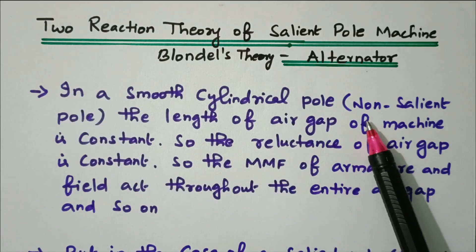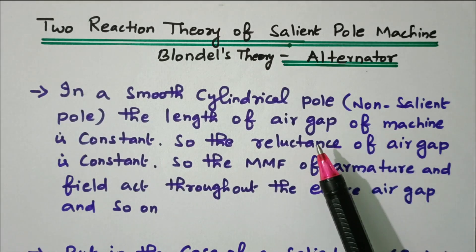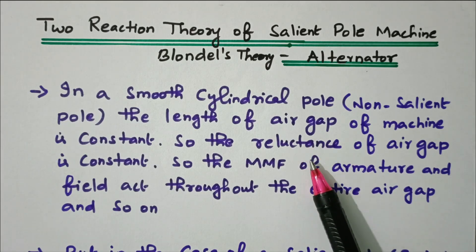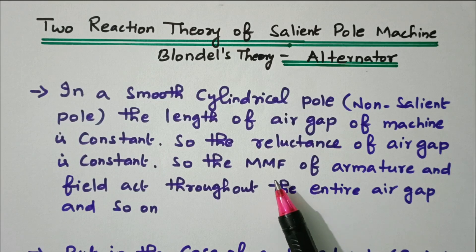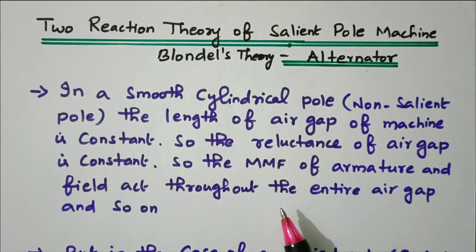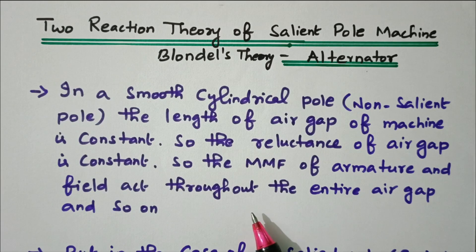So in a non-salient pole machine, there is no projection — it is a smooth cylinder. The air gap is uniform, the reluctance is uniform, and the MMF of the field and armature act throughout the entire air gap uniformly.